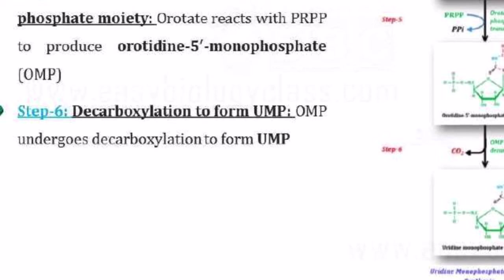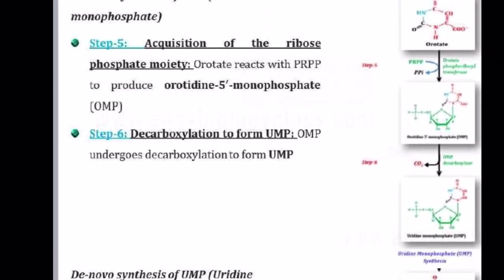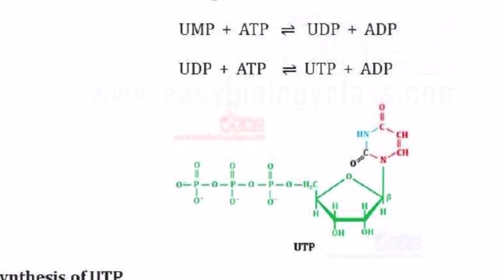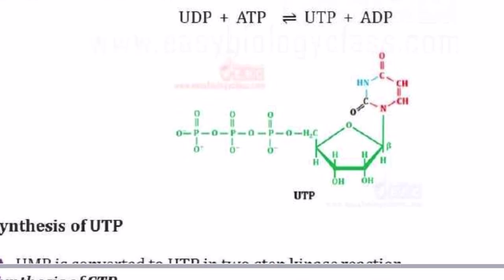UMP will be further converted because it is only a monophosphate. We need diphosphate and triphosphate. UMP is converted into UTP with the help of two-step kinase reactions. Two ATP molecules are required. In the first step, UMP combined with ATP forms UDP — uridine diphosphate — and ADP is removed. Further, UDP combined with ATP forms UTP — uridine triphosphate — which has three phosphate groups, sugar, and a nitrogenous pyrimidine base attached.